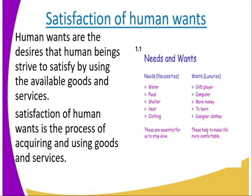Satisfaction of human wants is a process of acquiring and using goods and services. That process of acquiring the goods and services is when you are satisfying your needs. Now, when we talk about needs — as from what you have on the screen, that image — you have needs, which are necessities, and you have wants. So we say human needs and human wants.